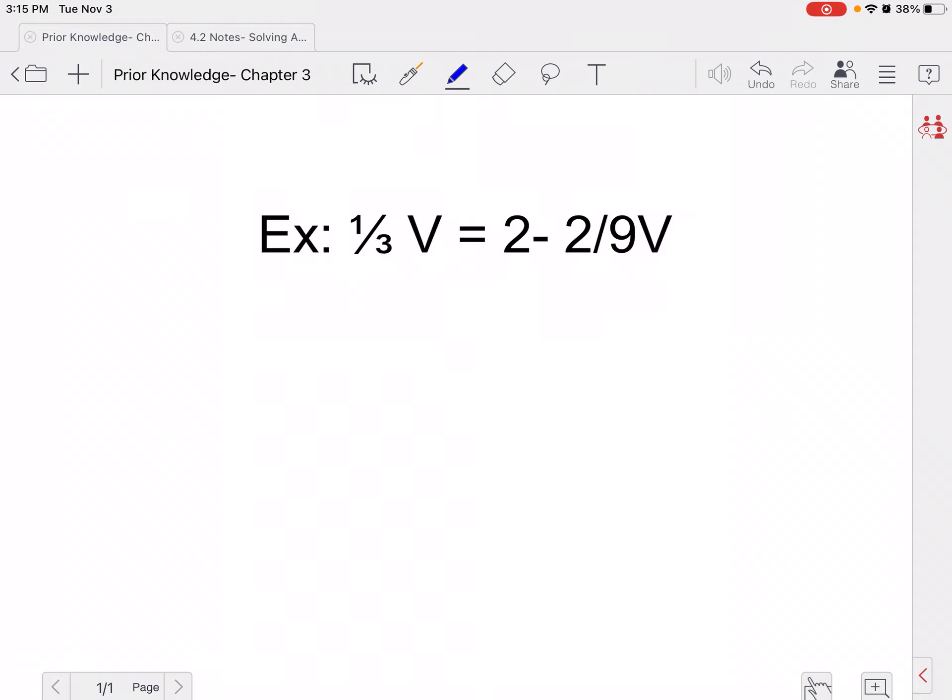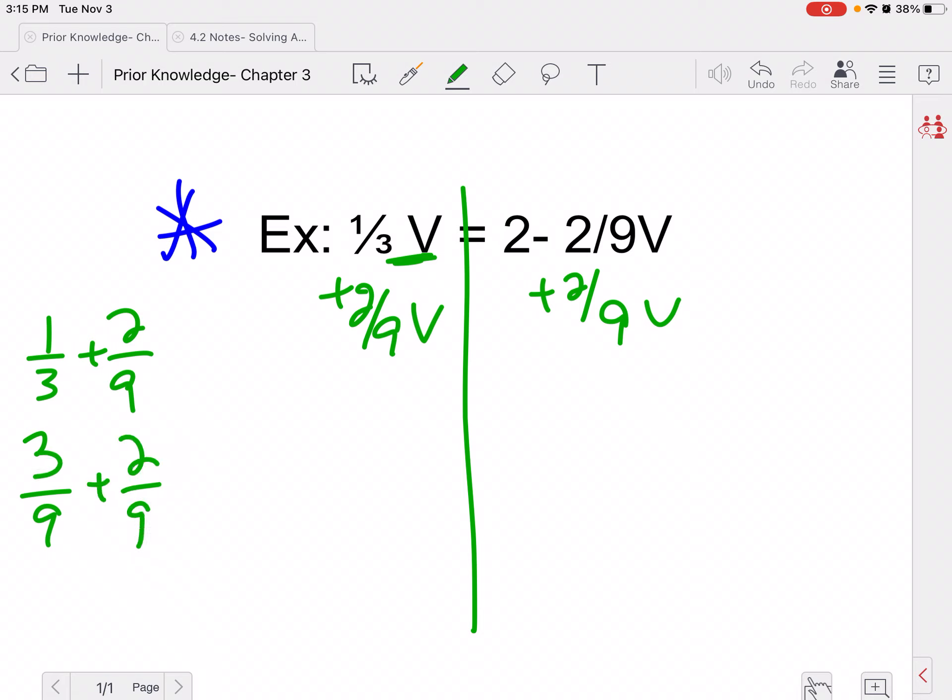Go ahead and try this one. I know there's fractions, but that's okay. You can do it still. Again, I'm seeing that I have v's on both sides. Since this v is almost by itself, I'm going to move this one over. So off to the side, I would be like, well, 1/3 plus 2/9 needs a common denominator, right? So multiply top and bottom by 3 there. So this gives me 5/9v equals 2.